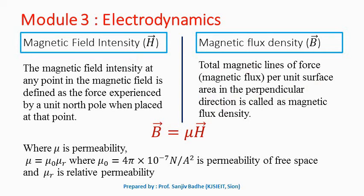B̄ and H̄ are related by the relation B̄ = μH̄, where μ is called as the permeability of the medium. μ can be written as μ₀μᵣ, where μ₀ is 4π × 10⁻⁷ Newton per ampere squared, and this is called as permeability of free space. In free space this equation becomes B̄ = μ₀H̄. μᵣ is called as the relative permeability of the medium, and in free space μᵣ = 1.